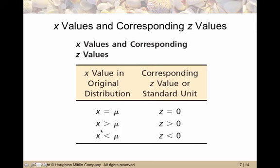If the original score is bigger than the mean, your z-score is going to be bigger than the mean. And if the original score is less than the mean, of course, the z-score is going to be less than 0.